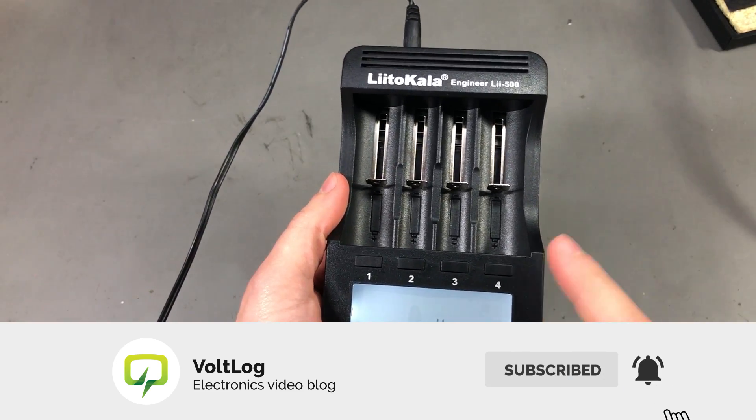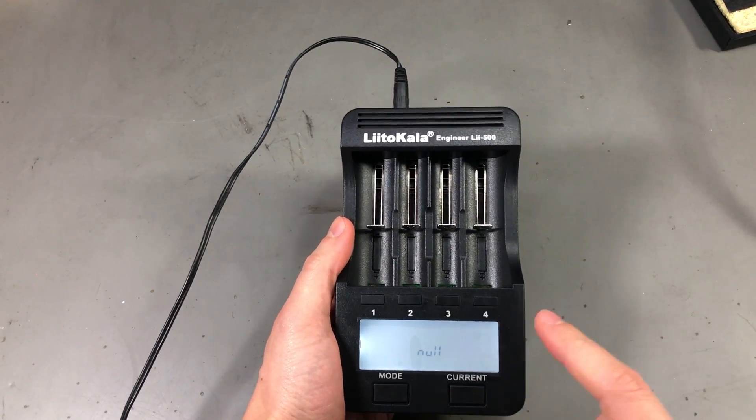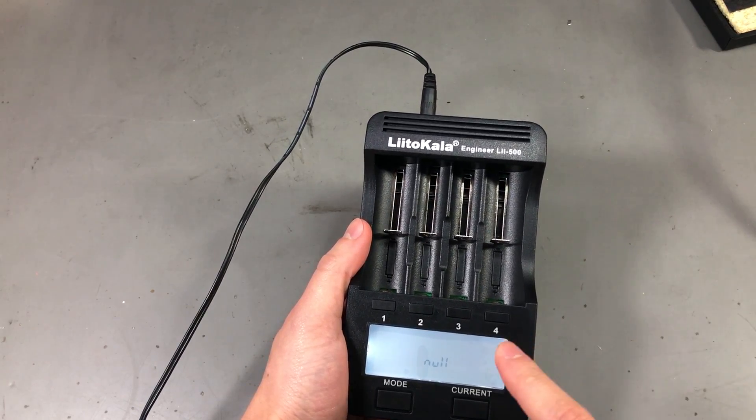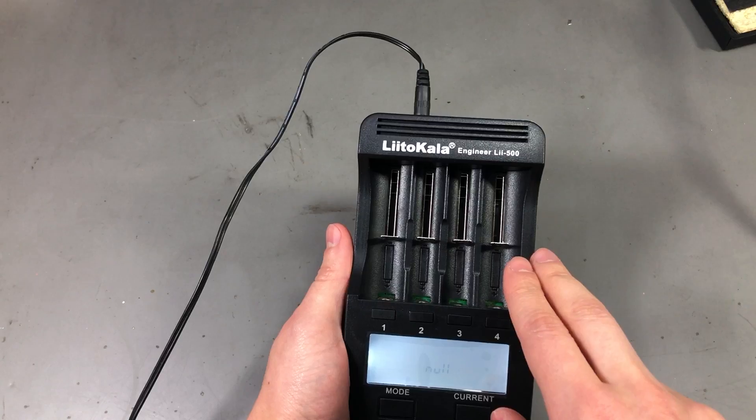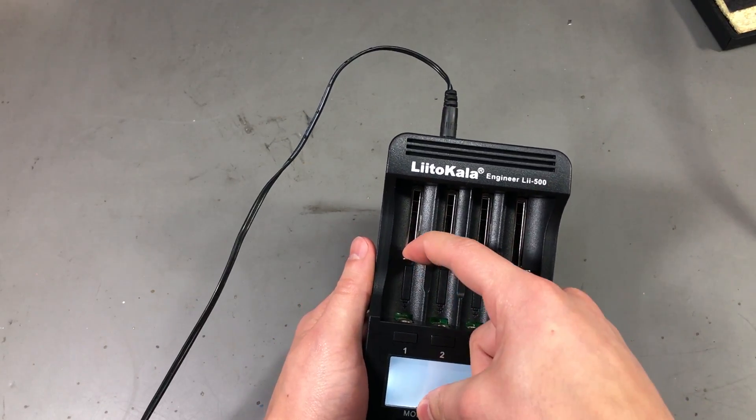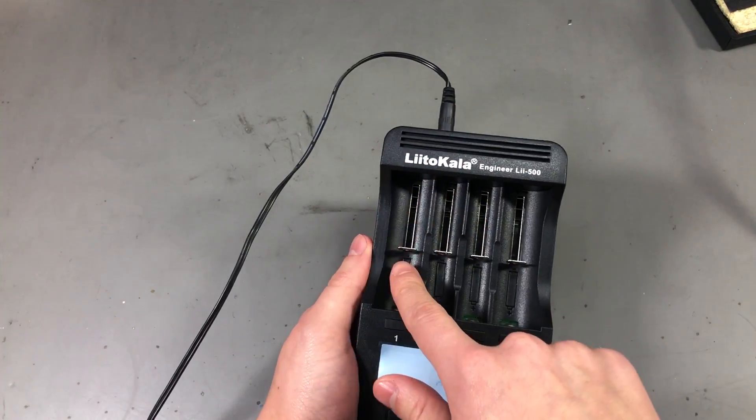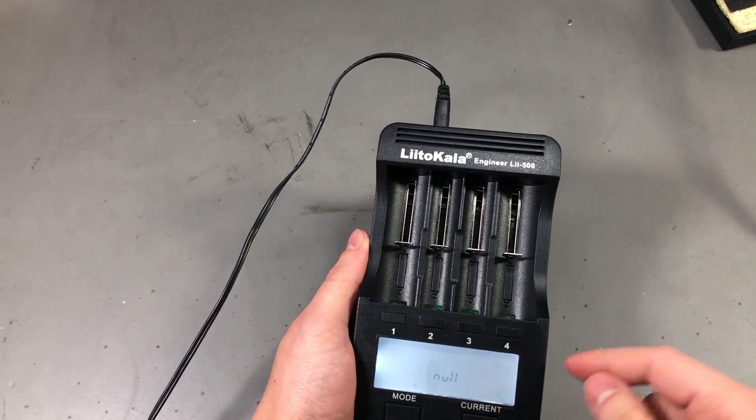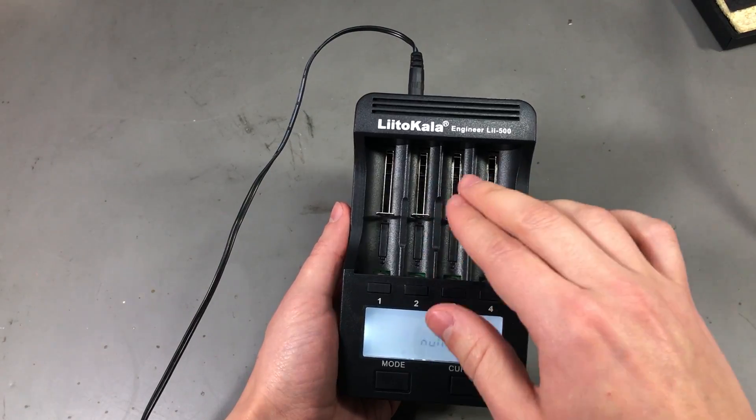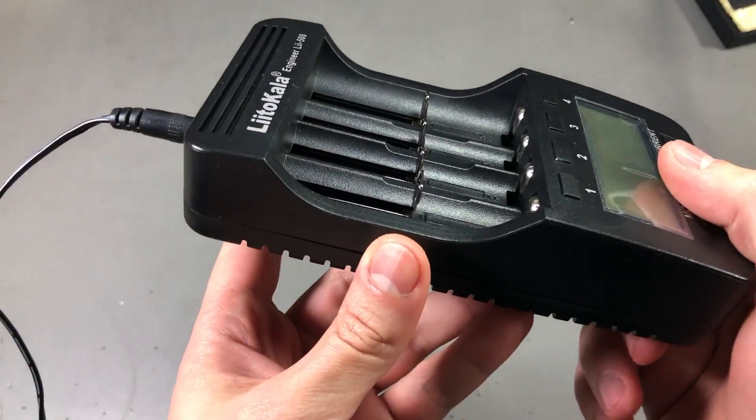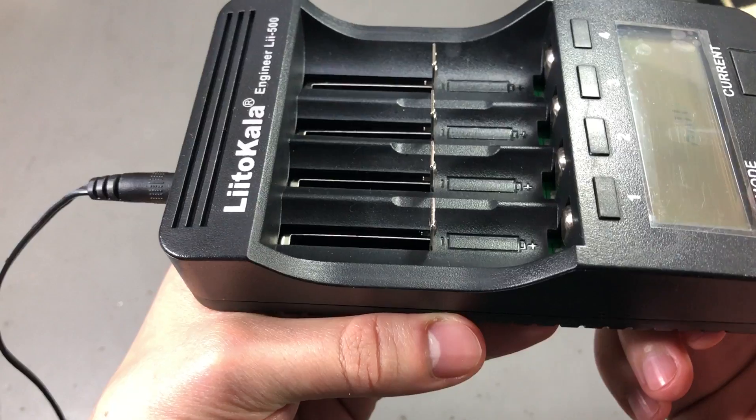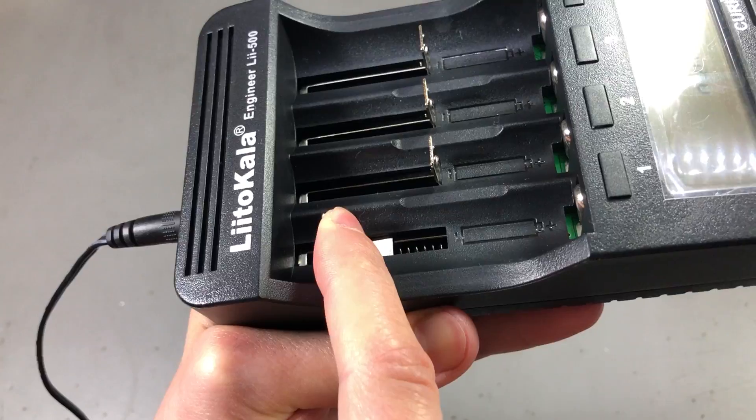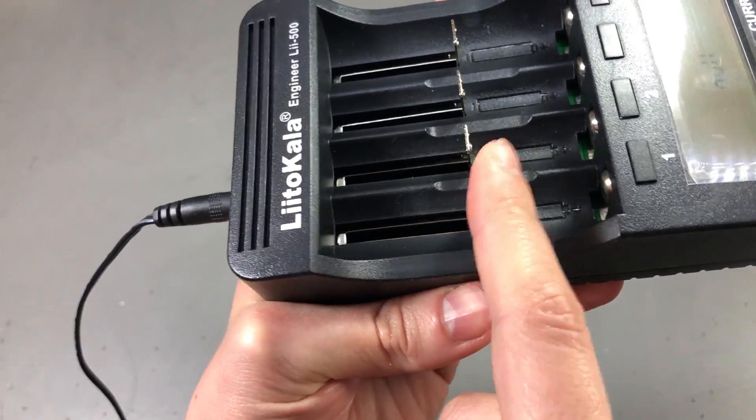Now this charger supports Li-Ion cells and Nickel-Metal-Hydride cells. It does not support Li-Ion phosphate batteries but it has 4 independent charging ports, each with its own spring loaded socket. So that means you can charge different types of batteries at the same time because each bank will handle its own battery accordingly. These spring loaded sockets allow you to connect different sized batteries up to 26650.